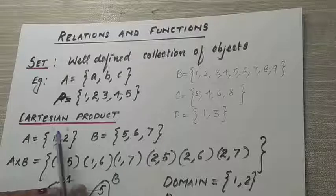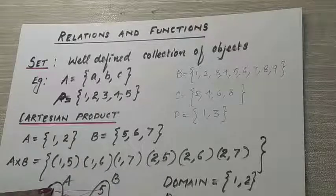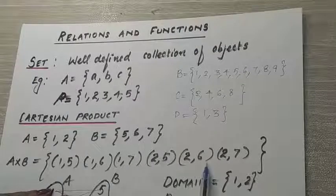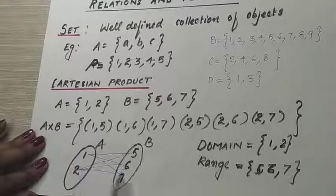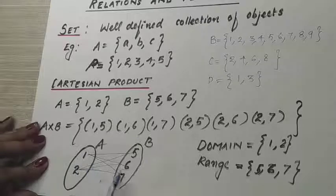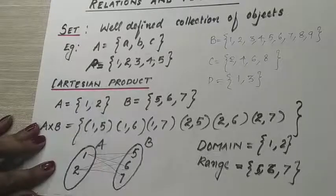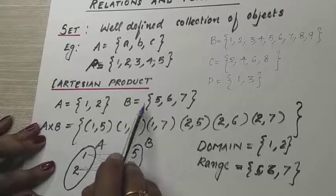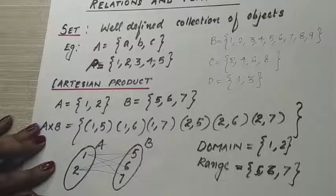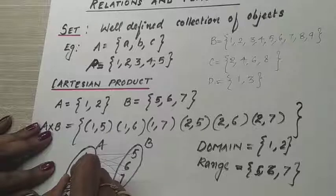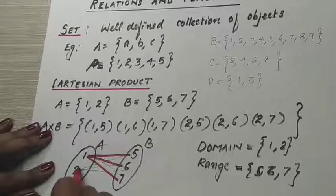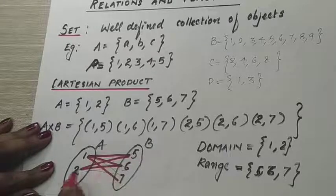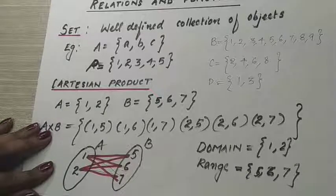The next topic is Cartesian product, which you also already learned last year. Cartesian product means the product of the sets. Here I took two sets A and B. In set A, the elements are 1 and 2, and in set B, the elements are 5, 6, and 7. So the cross product will give us: (1,5), (1,6), (1,7), (2,5), (2,6), (2,7).